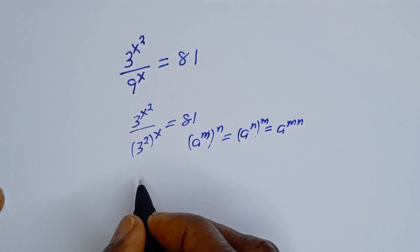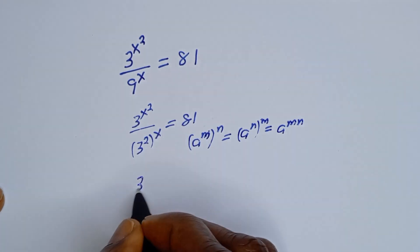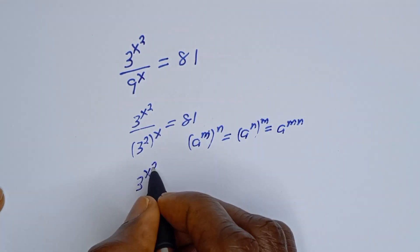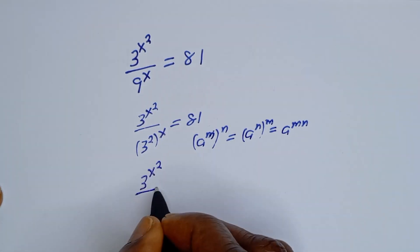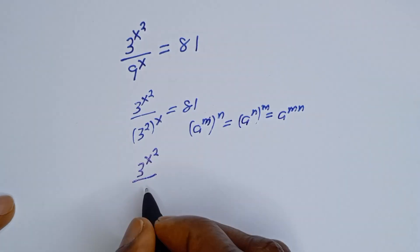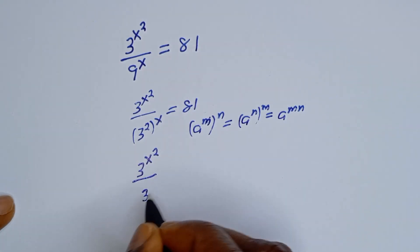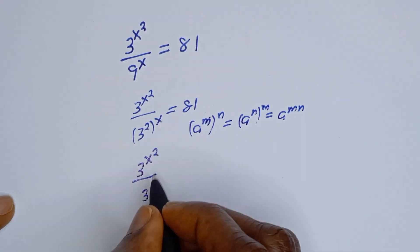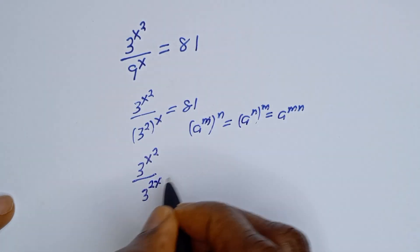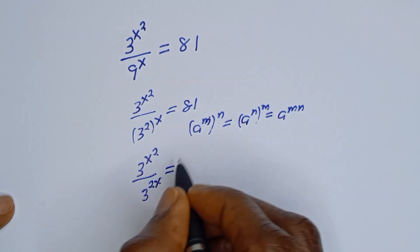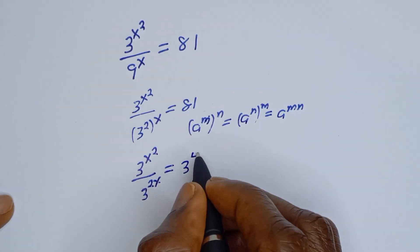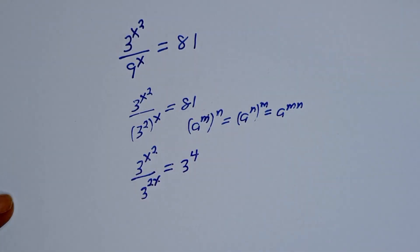Then this can be written as 3 to the power of x squared divided by 3 to the power of 2x is equal to 81, and 81 can be written as 3 to the power of 4.